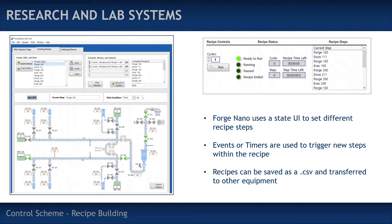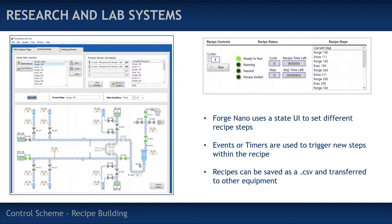Although ALD is the obvious use for these recipes, we also have recipes for figuring out minimum fluidization, ramping heating up or down, annealing, and other auxiliary processes that benefit from automation.